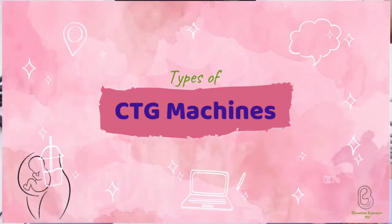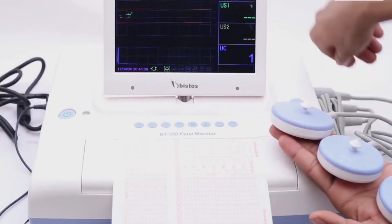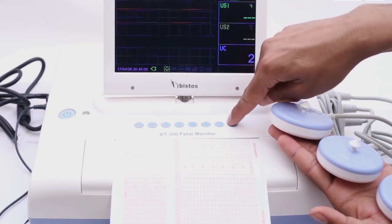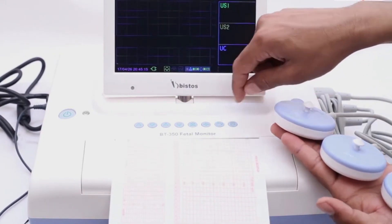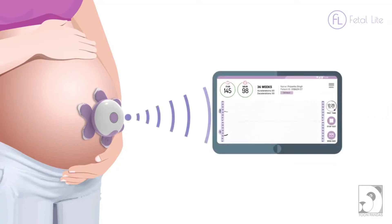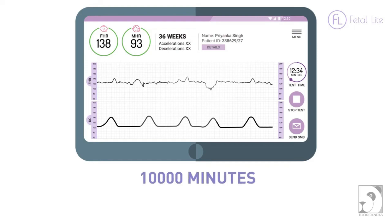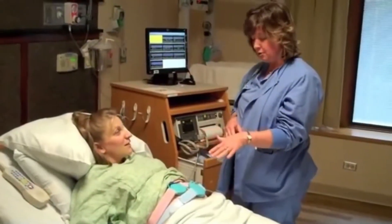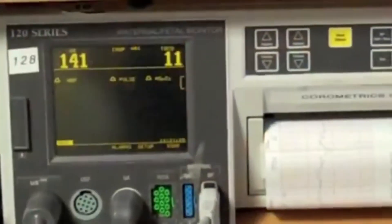CTG machines can be classified as conventional fetal monitors, wireless fetal monitors, and central station-based fetal monitors. Conventional CTG machines are stand-alone machines with a wired ultrasound transducer, tocotransducer, and event marker. In wireless CTG machines, the ultrasound probe, tocotransducer, and event marker are connected wirelessly to the main device, continuously monitoring the patient without any cables. Central station-based fetal monitoring is used in obstetric and gynaecology departments where more than one patient can be monitored at one place, with multiple CTG machines connected to a central station by wire or by medically graded wireless communication.